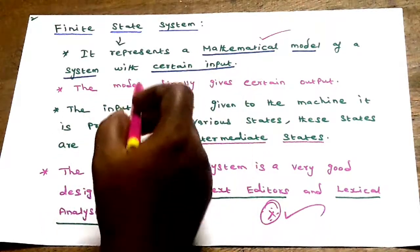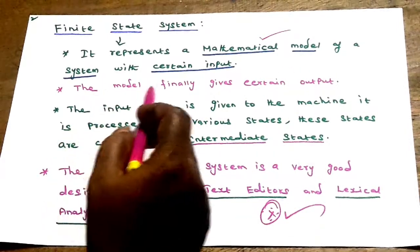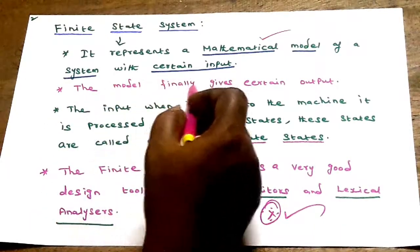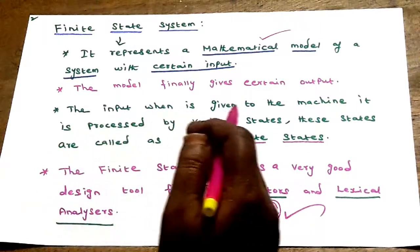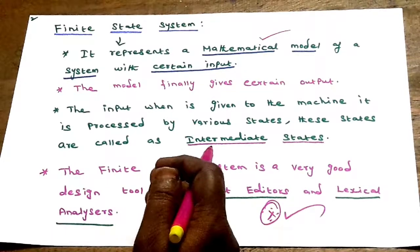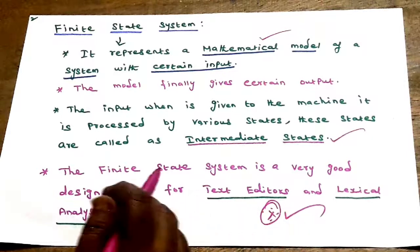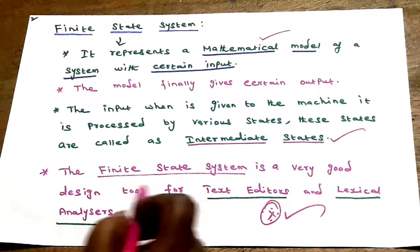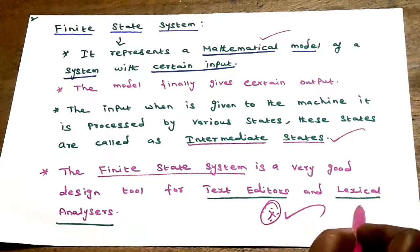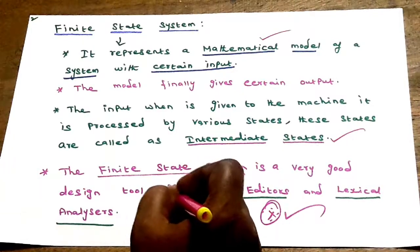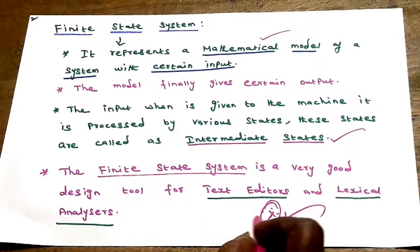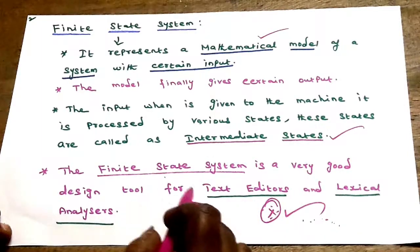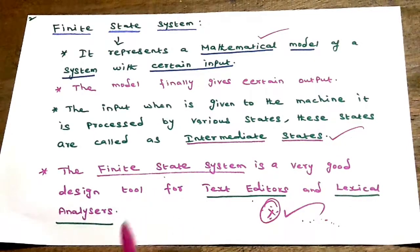Finite state system represents a mathematical model with certain input. The mathematical model is the finite state system. Finally, it gives certain output — input, then output, with in-between intermediate states. Finite state system is a very good design tool for text editors and lexical analyzers.